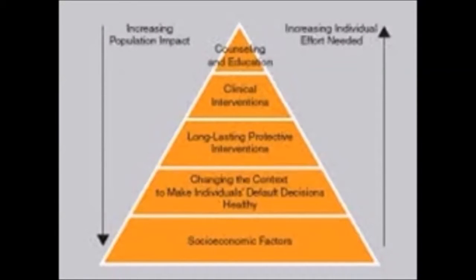Dr. Frieden's five-tier pyramid best describes the impact of different types of public health interventions and provides a framework to improve health. At the base of this pyramid — indicating interventions with the greatest potential impact — are efforts to address socioeconomic determinants of health. However, these are very difficult and politically hard to implement.